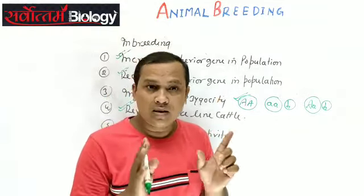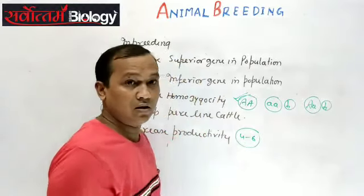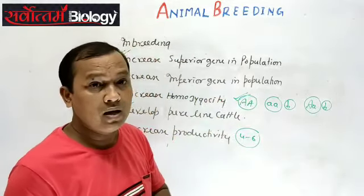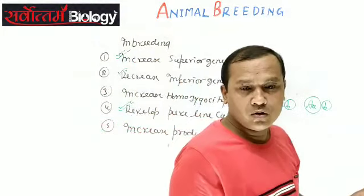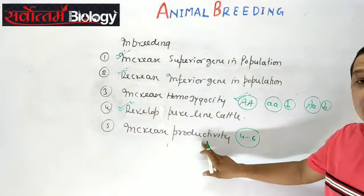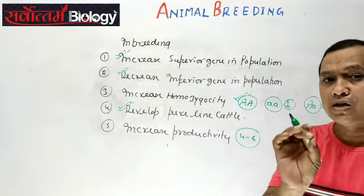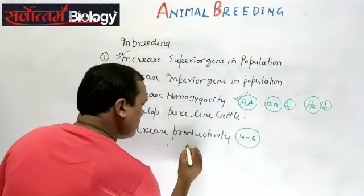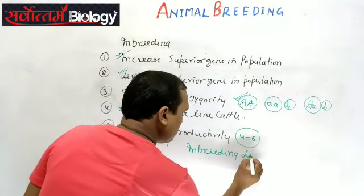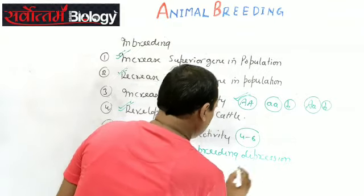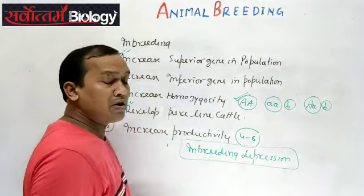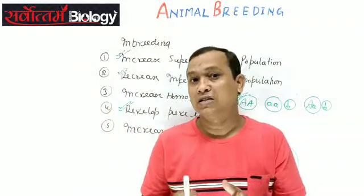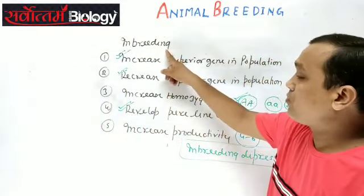However, this can only be done for 4 to 6 generations. If inbreeding is continued beyond that — continuous inbreeding — there is a decrease in productivity. This decline in yield, quantity, and quality due to continuous inbreeding is called inbreeding depression.